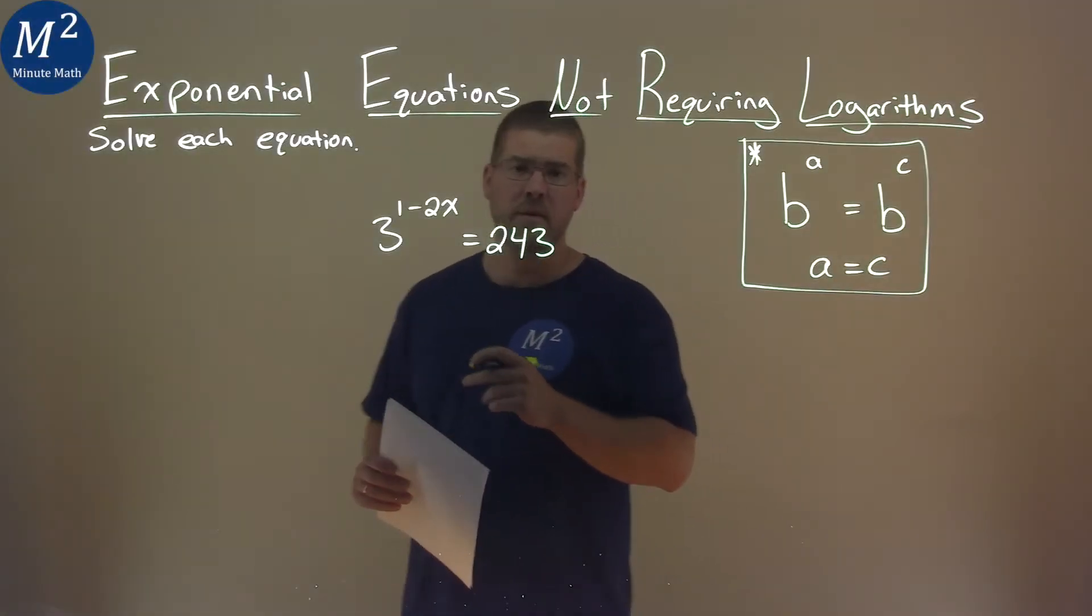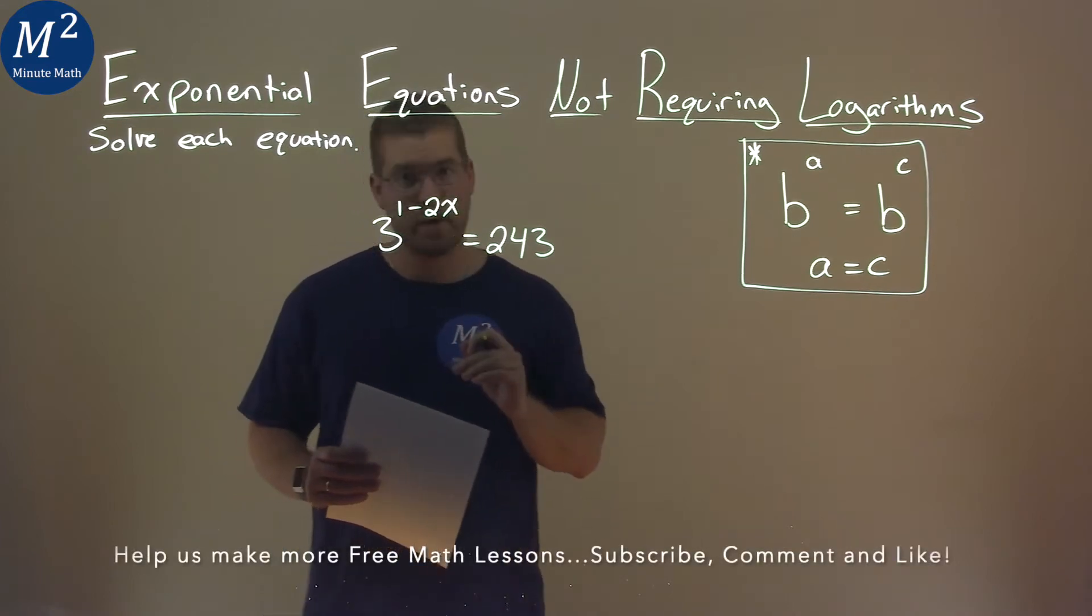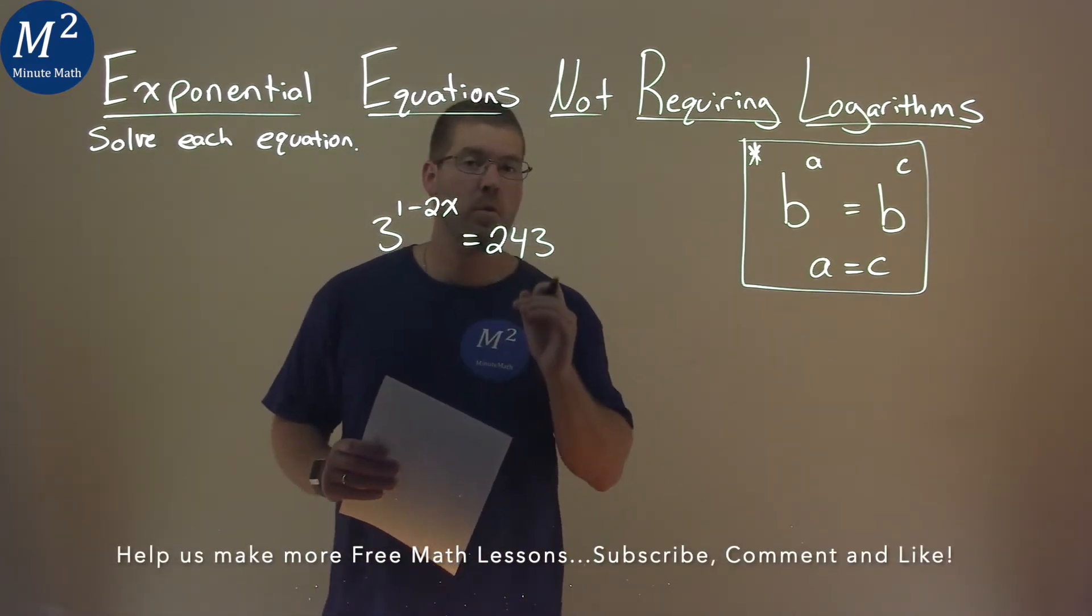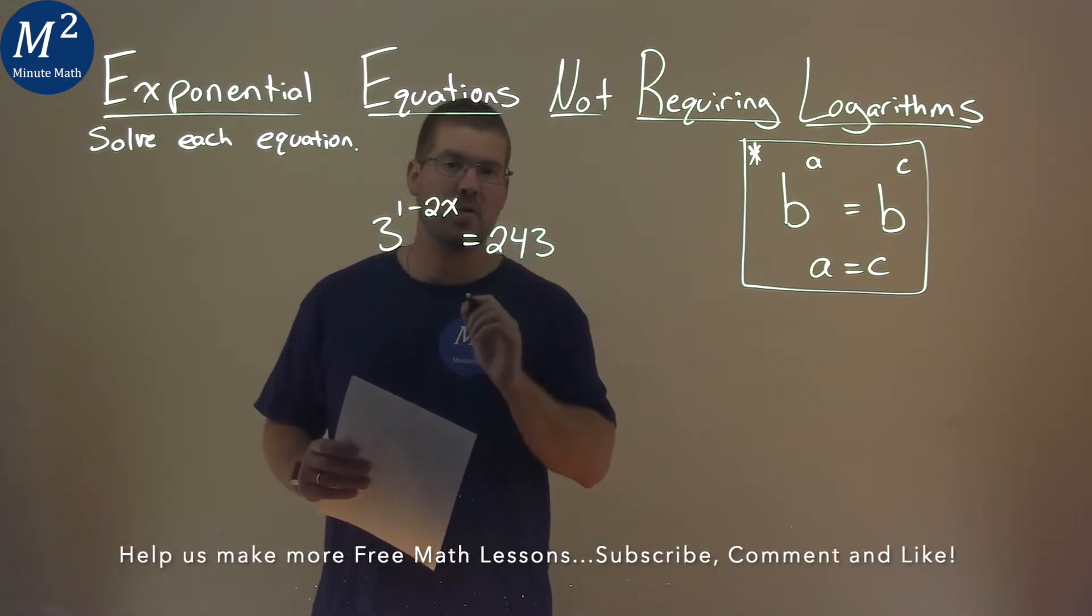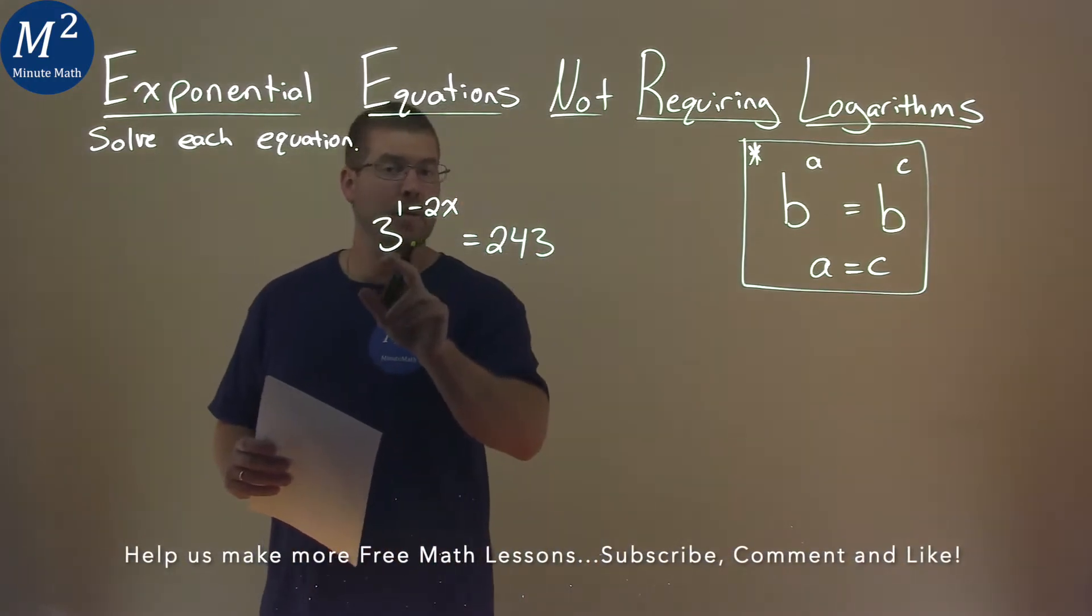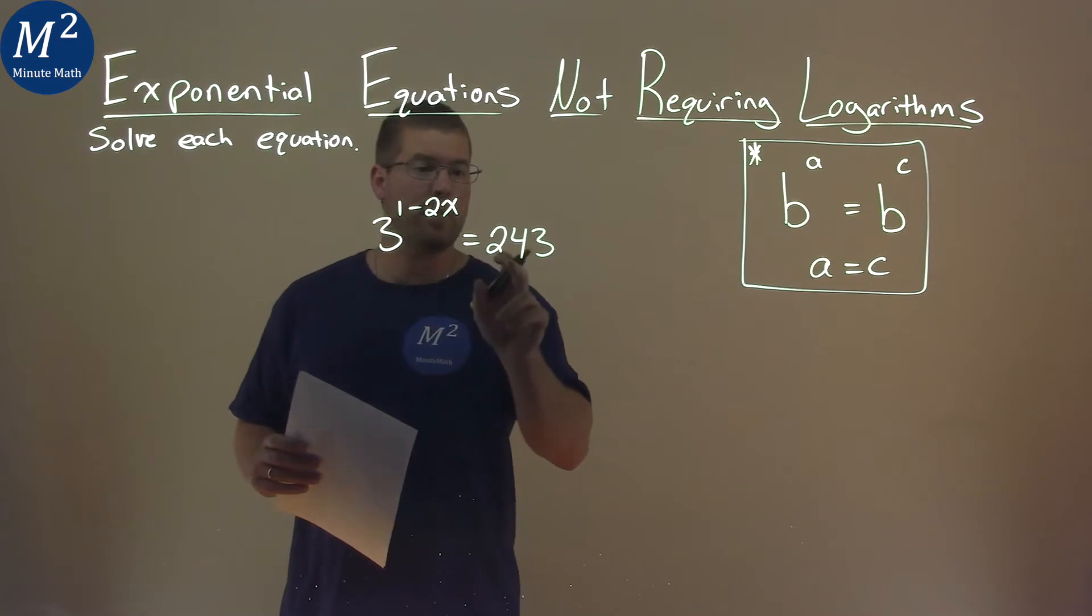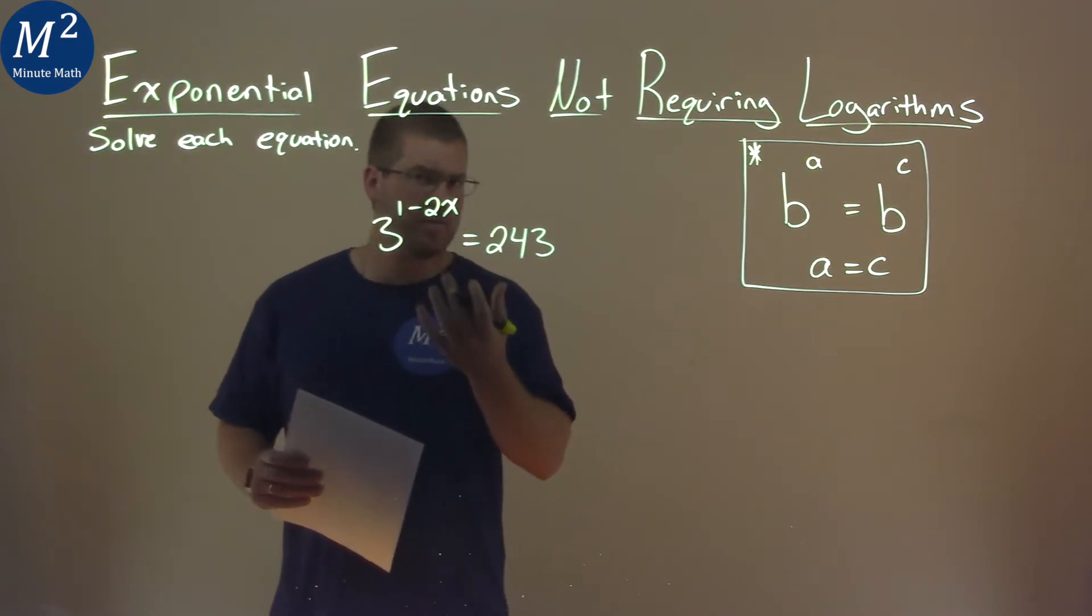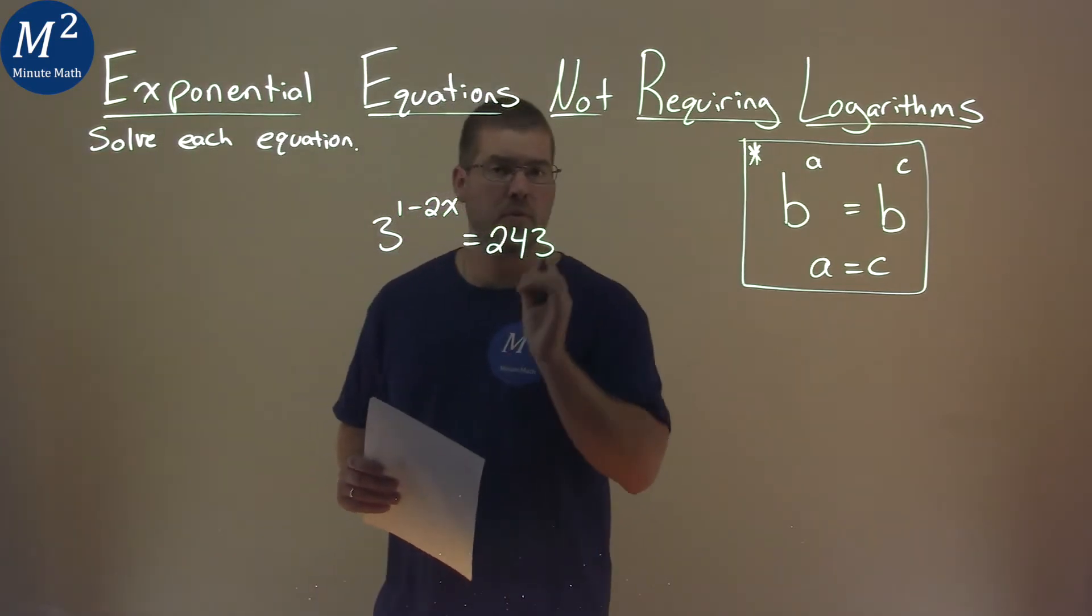We're given this problem right here, 3 to the 1 minus 2x power is equal to 243, and we need to solve this equation. Well, first thing is I want to have the same base here for both sides of the equal sign. 3 I can't really do anything with, but 243 I can.